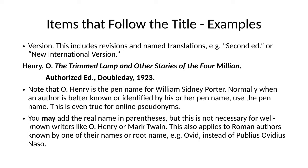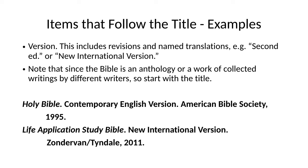Here are some examples of Bible versions. Usually the Bible is just Holy Bible. Since the Bible is an anthology — a collection of writings by different writers — you start with the title. So you start with Holy Bible, Contemporary English Version, or whatever. Life Application Study Bible is the marketed title of a particular edition, in the New International Version. Note that there should be a comma after the version, not a period.